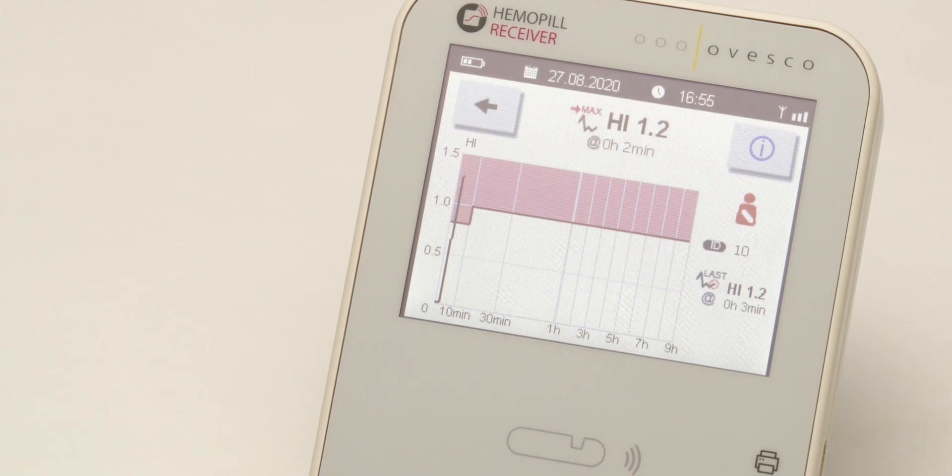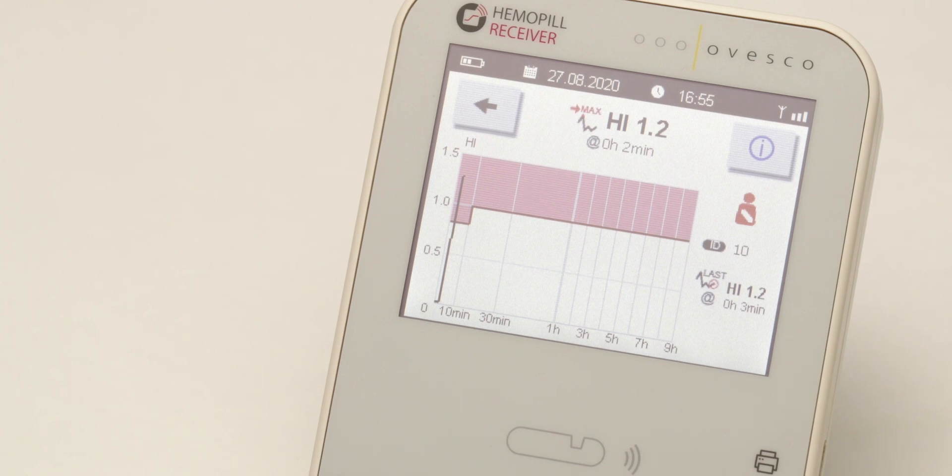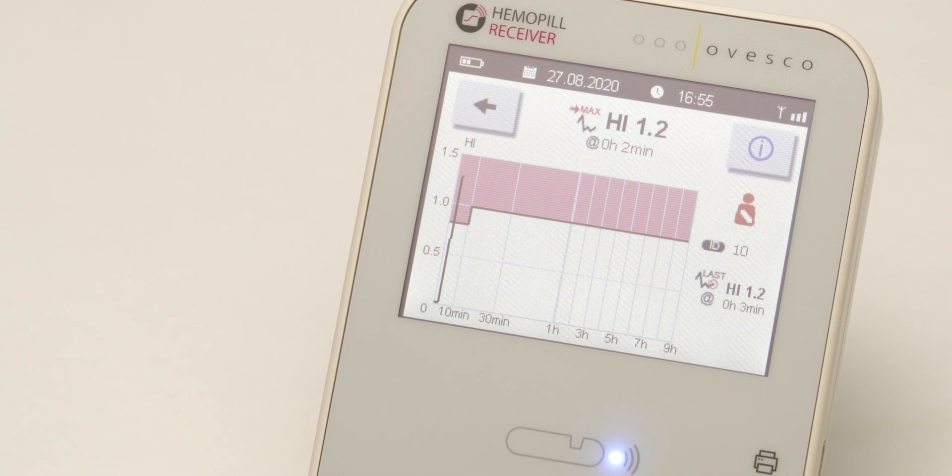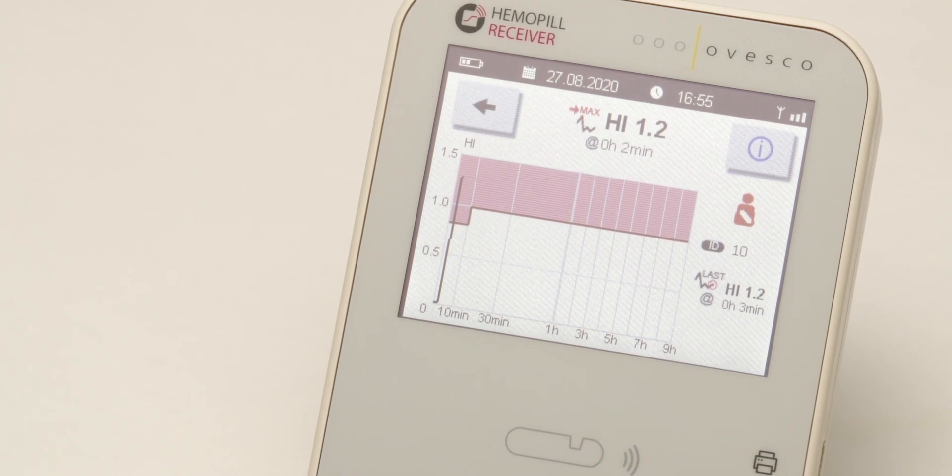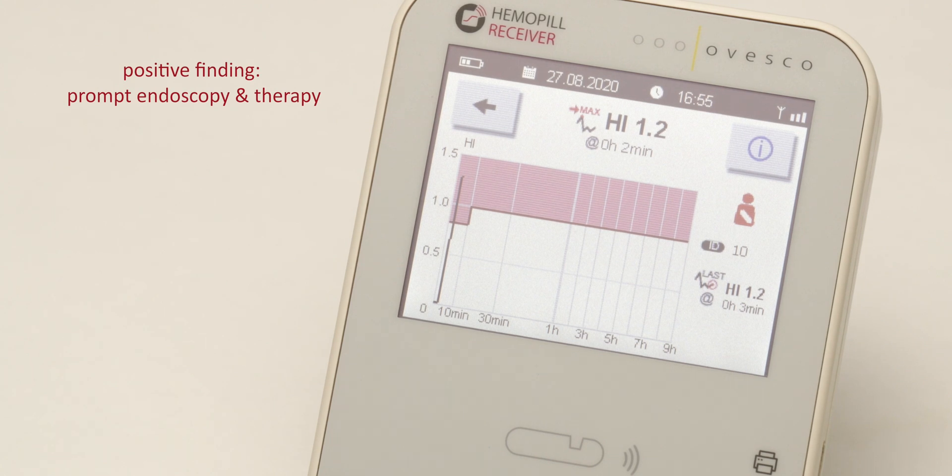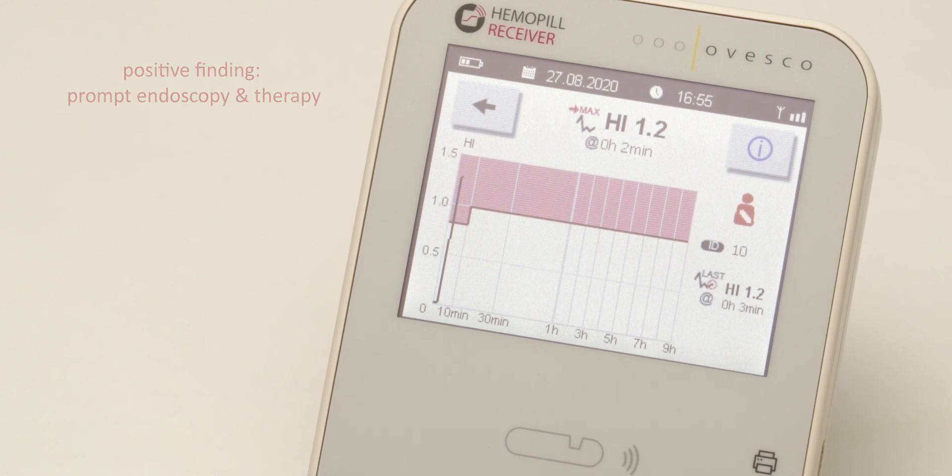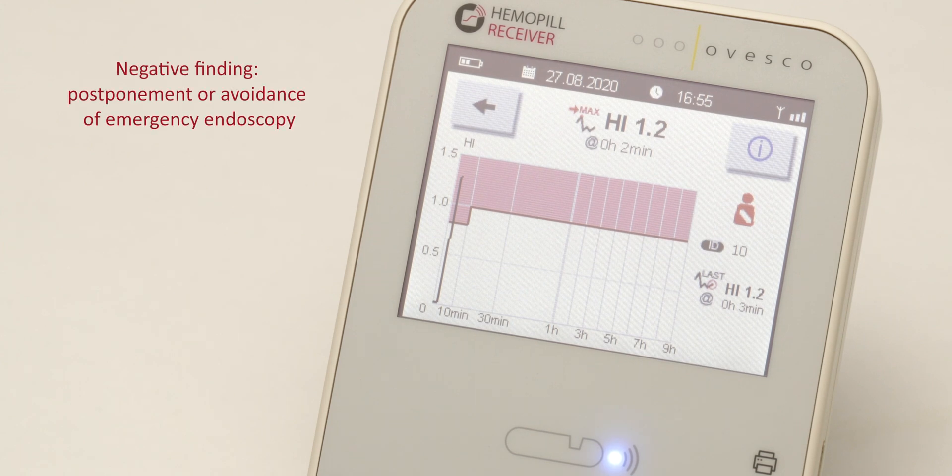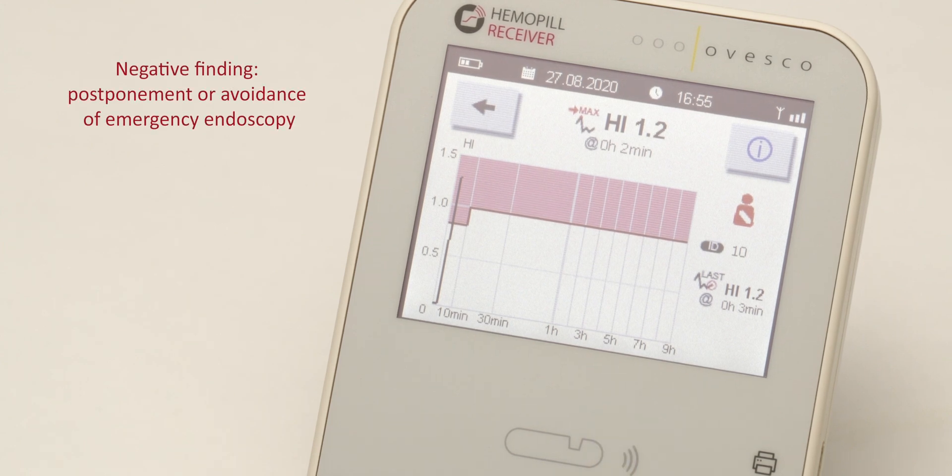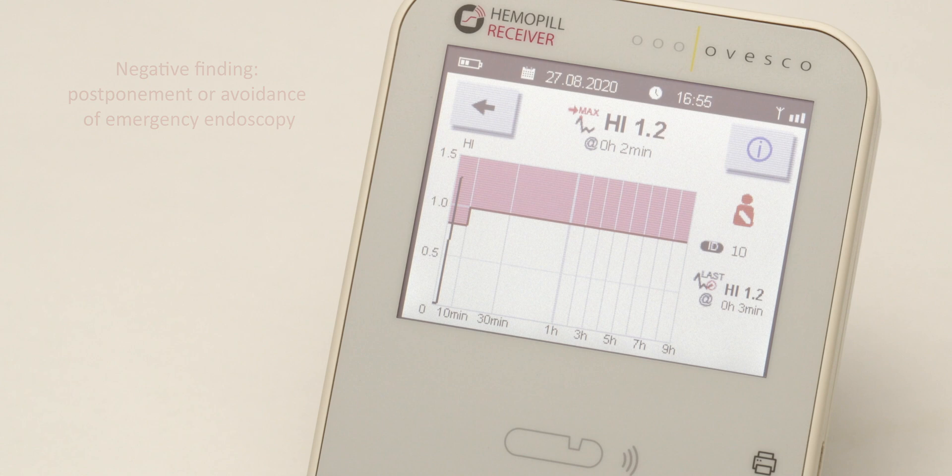When a value appears in the red area of the diagram, blood has been detected. In case of gastric bleeding, blood can be detected within a few minutes after swallowing the capsule. A positive result indicates a prompt endoscopy and therapy, whereas a negative finding indicates postponement or avoidance of an emergency endoscopy.